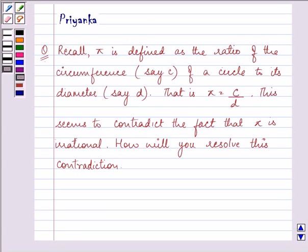Hi and welcome to the session. I'm Priyanka and I'll be helping you with the following question which says: Recall, pi is defined as the ratio of the circumference of a circle to its diameter.